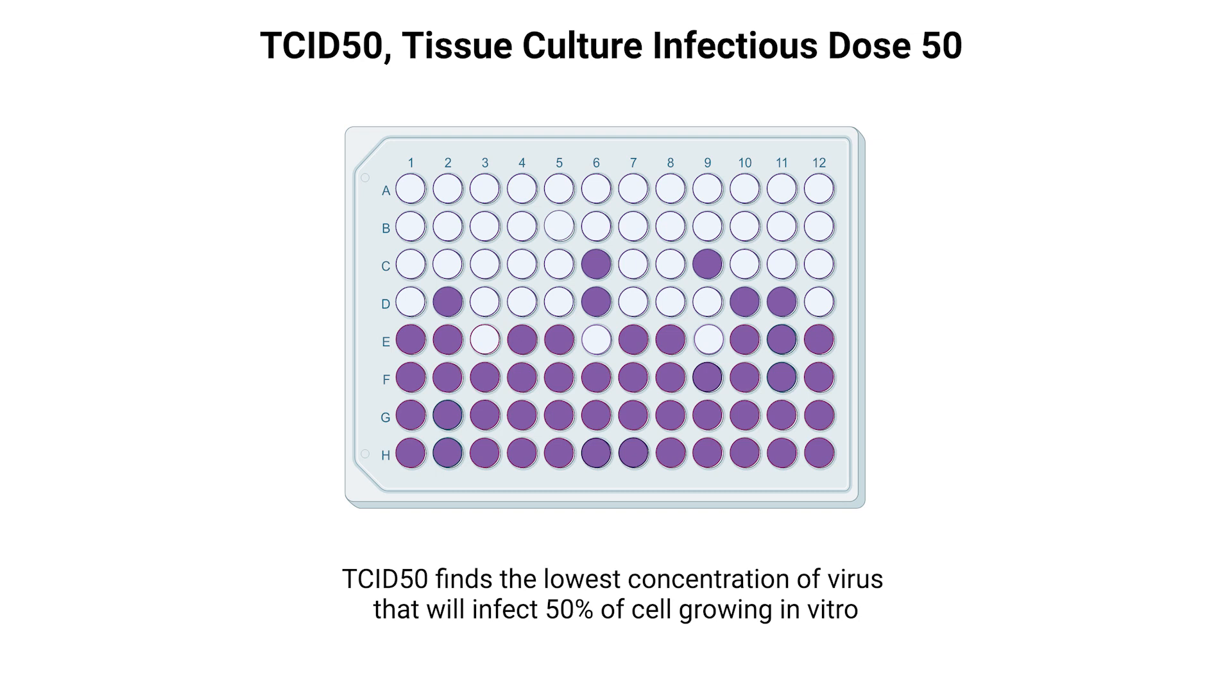The TCID-50 assay, or Tissue Culture Infectious Dose 50, measures the smallest concentration of virus that will infect 50% of the cell cultures in a sample.